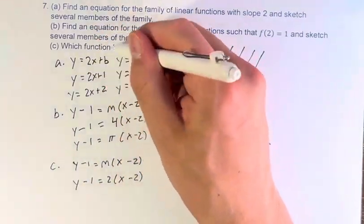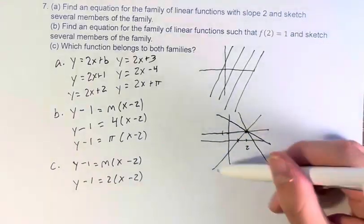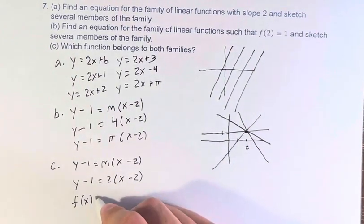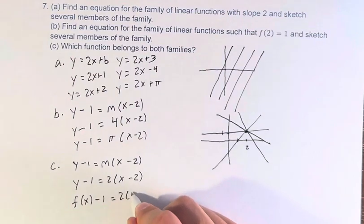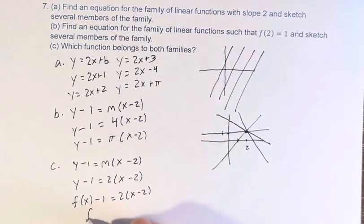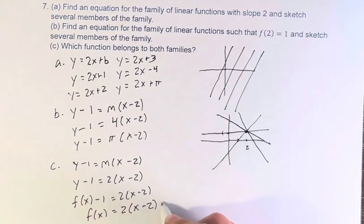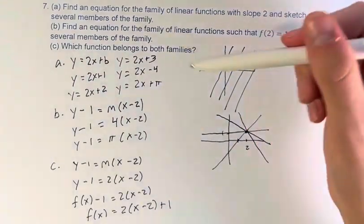We are looking for the function, not the equation graphed in the xy plane. So this is f of x minus 1 is equal to 2 times x minus 2. Therefore, f of x is equal to 2 times x minus 2 plus 1. This function, f, belongs to both of these families.